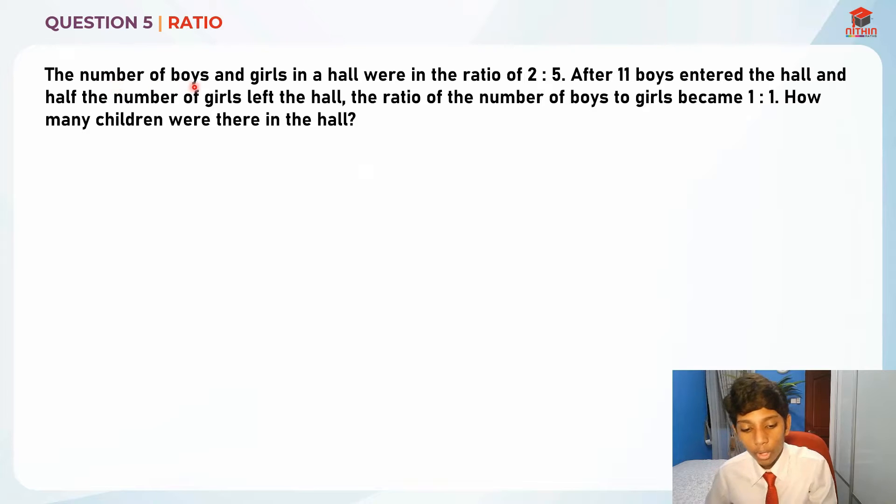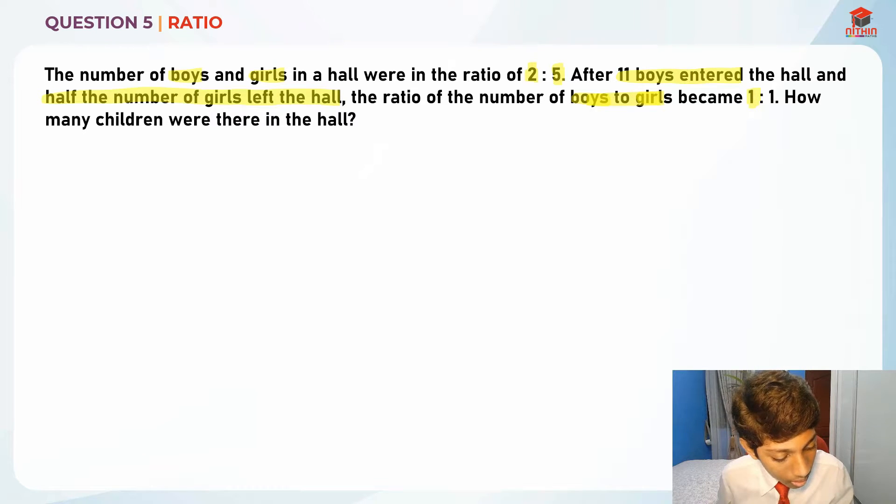The number of boys and girls in a hall were in the ratio of 2 is to 5. So this is actually really important. After 11 boys entered and half the number of the girls left the hall, the ratio of the number of boys to girls became 1 is to 1. How many children were there in the hall?